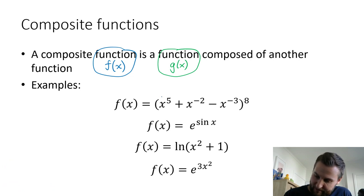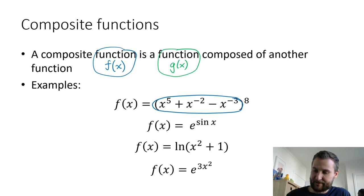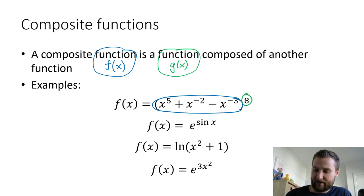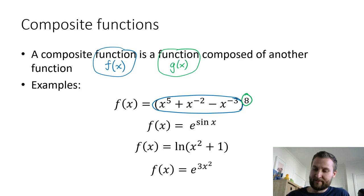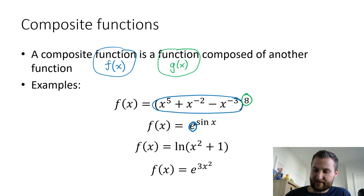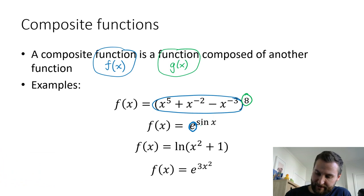From my first example, I can circle this using a bubble and say that's one function — I know how to differentiate that. And then my other function is to the power of 8, so I can use the power rule to differentiate that one. In the next one, I have e as an exponential function, and then it's composed of my trig function, sine x.